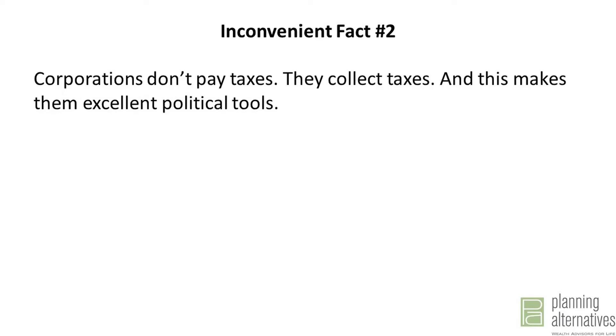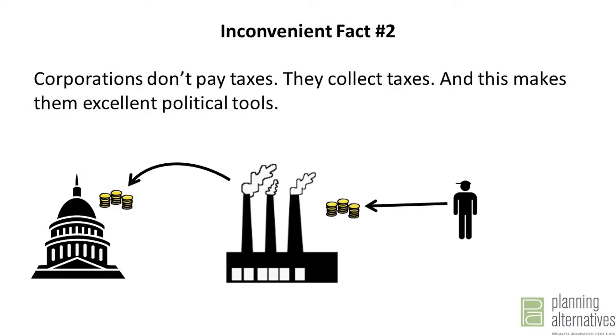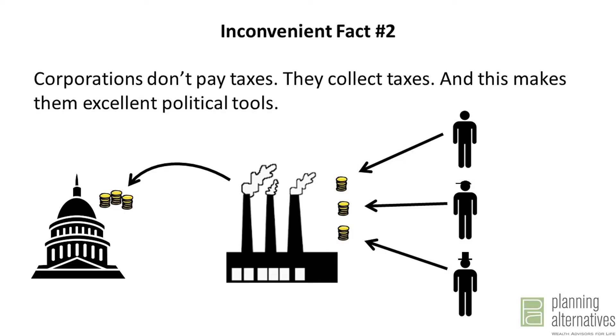Inconvenient fact number two: corporations don't pay taxes — they collect taxes. And this makes them excellent political tools. When a corporation pays taxes to the government, the money has to come from one of three places: either from consumers in the form of higher prices, from employees in the form of lesser wages and benefits, or from stockholders in the form of lesser returns. Either way, the money comes from one or a combination of these three groups. The corporation itself is simply a pass-through — a tool that collects the taxes and passes them on to the government.